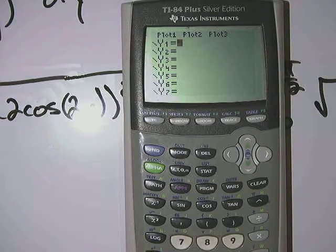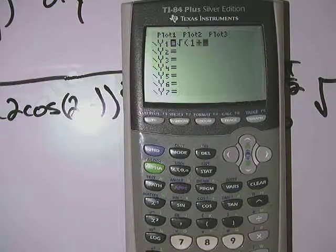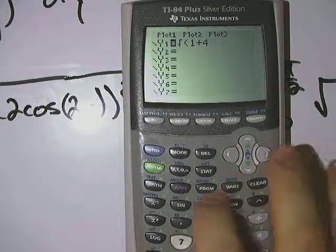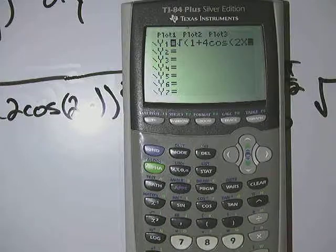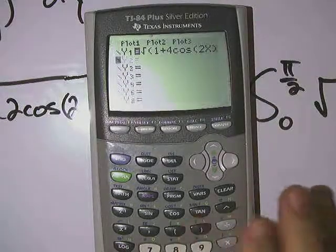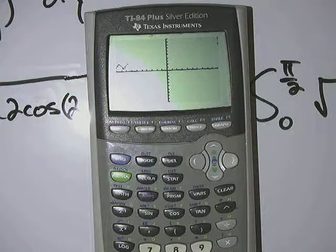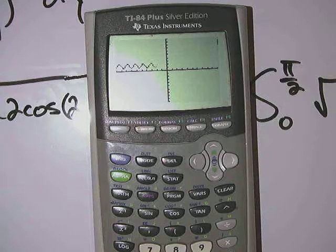I'm going to go to the graphing portion of the calculator. Then I'm going to type in the function, or actually it's the square root of 1 plus 4 cosine 2x. I'm going to use the variable x instead of y since I'm using a graphing calculator, close parentheses, squared, close parentheses around the square root, and hit the graph button.